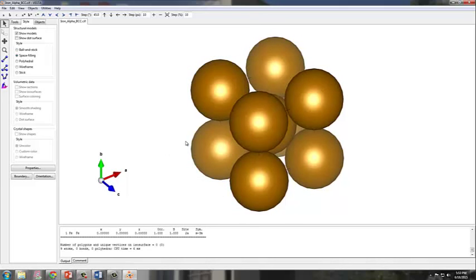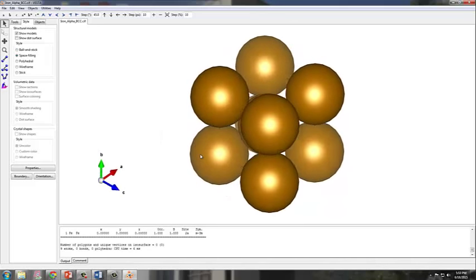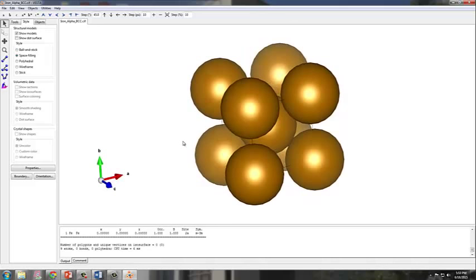So that concludes our lecture. We derived the relationship between the lattice parameter and the atomic radius for a body-centered unit cell. We also calculated the atomic packing factor of body-centered cubic, and finally, we visualized a body-centered cubic atom, more specifically ferrite, using the VESTA program.